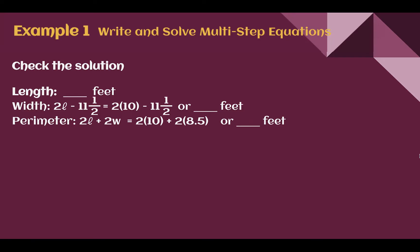Let's check our solution. We said the length was 10 feet, so the width would be 2 times 10, which is 20, minus 11 and a half — the width must be 8 and a half feet. We were told the perimeter was 37 feet. Testing with a length of 10 and a width of 8 and a half: 2 times 10 is 20, and 2 times 8 and a half is 17. 20 plus 17 is 37, which matches. So we found the correct length and width.